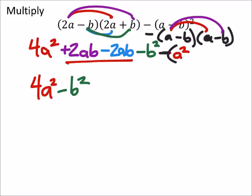And this is minus ab. And then the next one, minus ab. And then negative b times negative b is plus b squared.